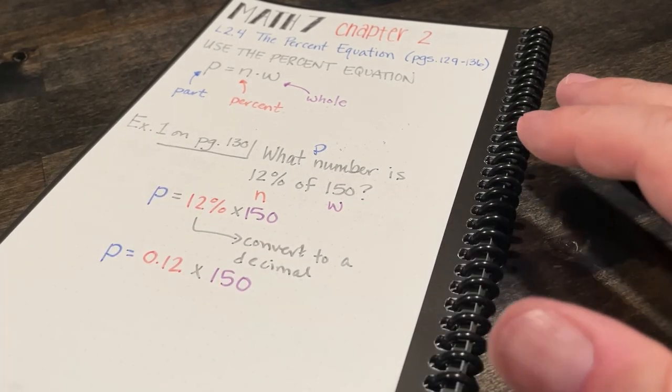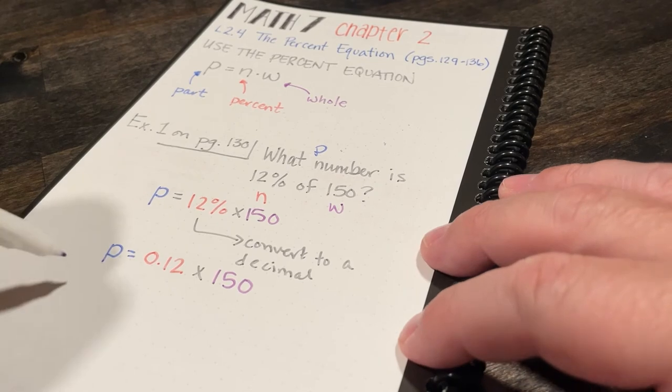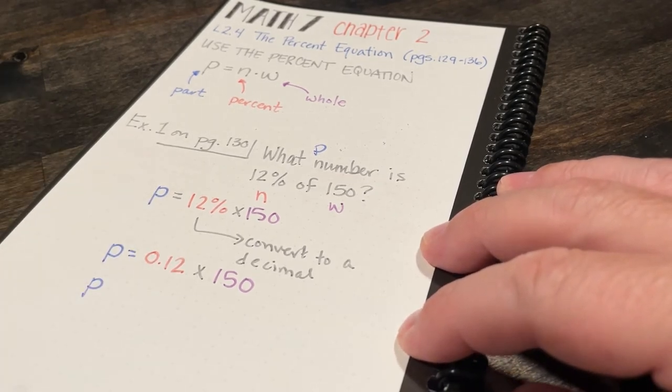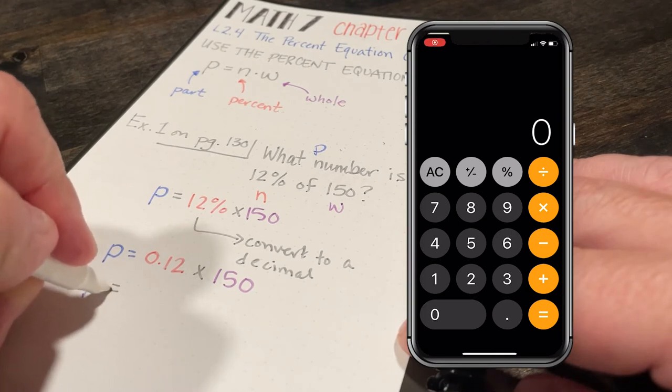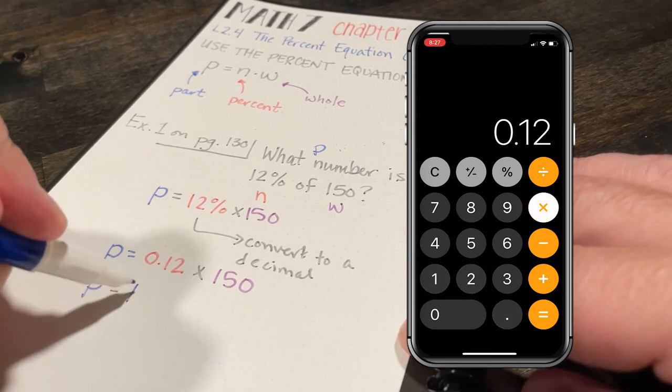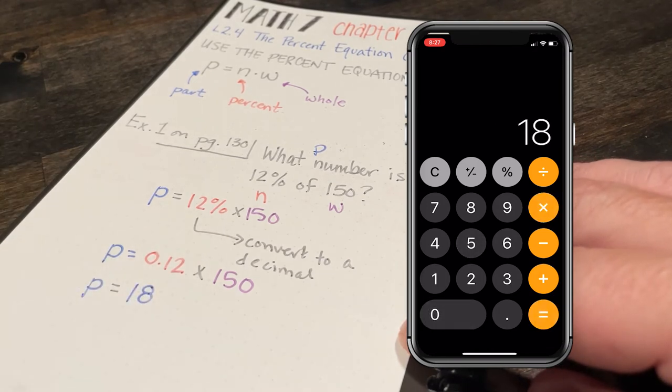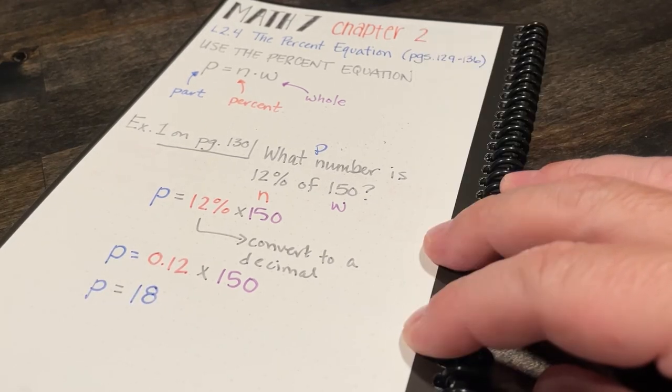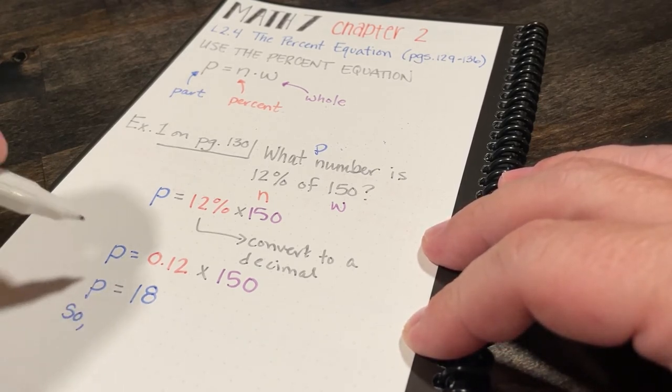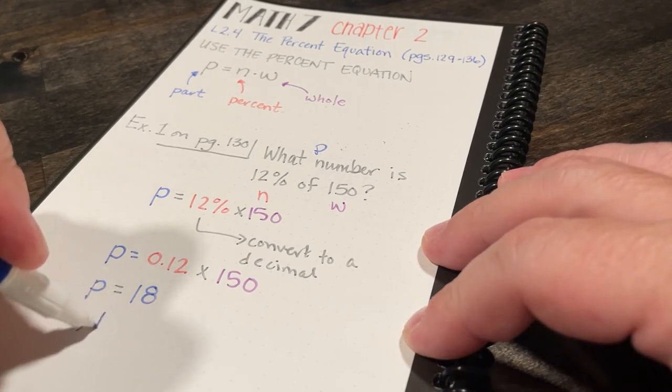So at this point, I just want to multiply 0.12 times 150 to find the part. So I can say that 18 is 12% of 150.